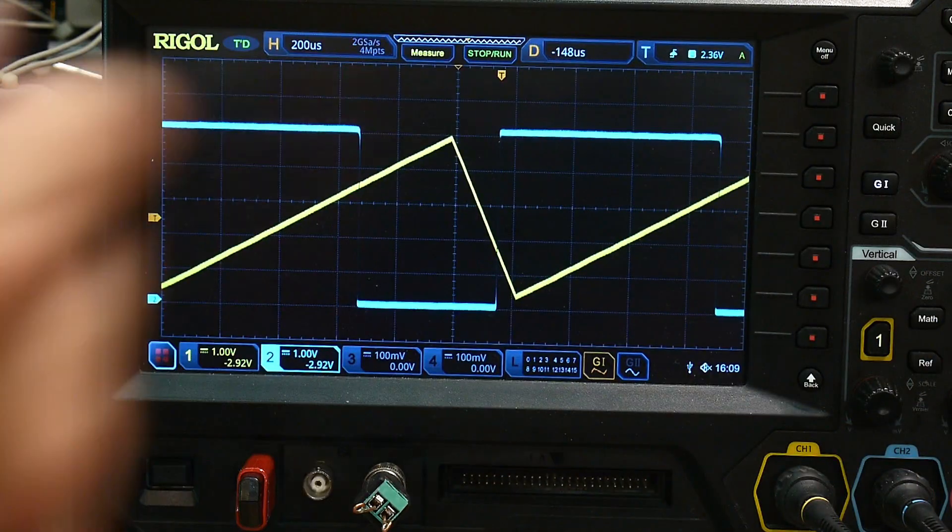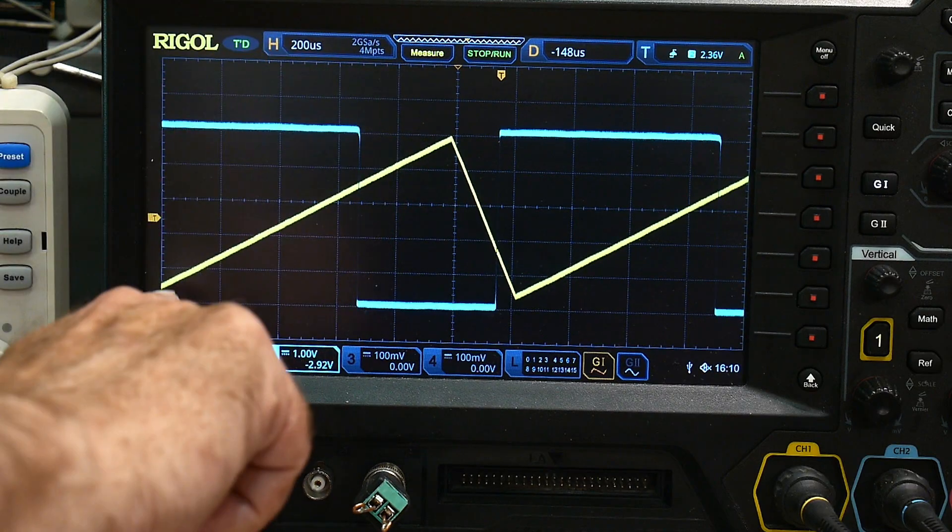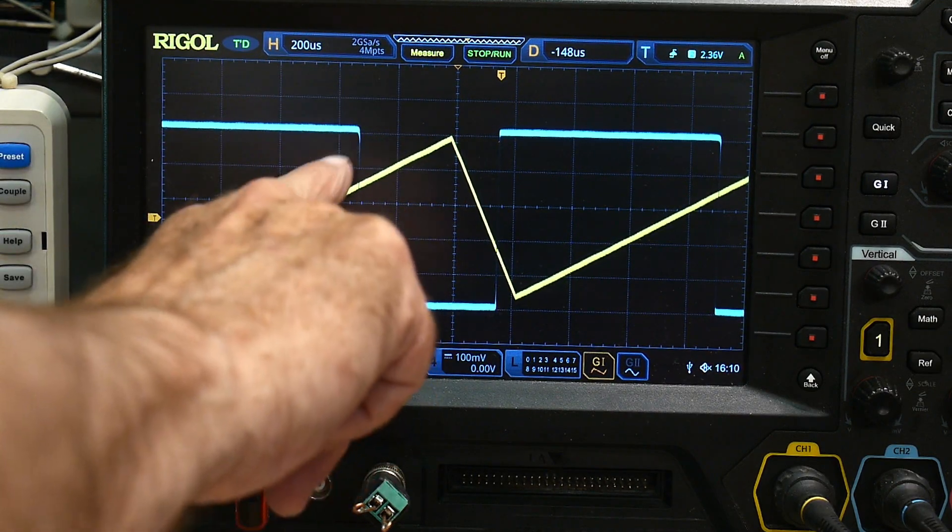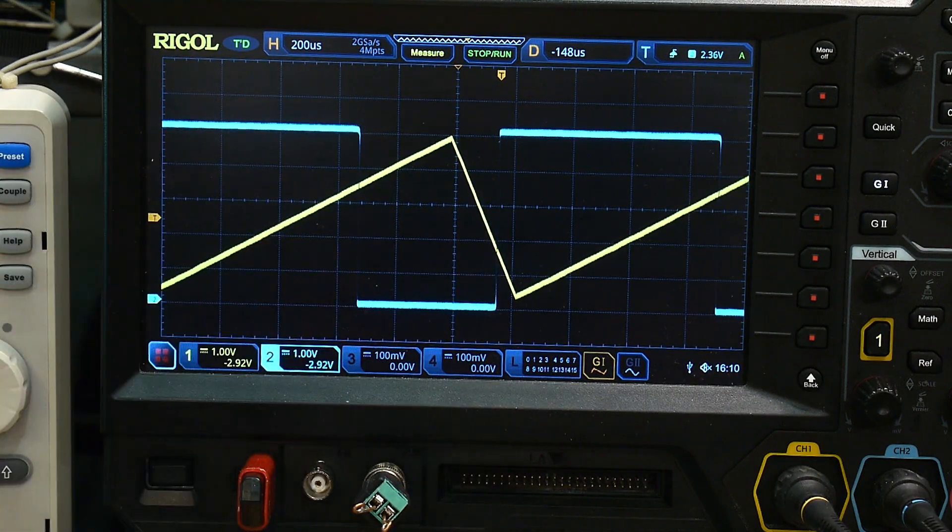So yeah, there you go. It is on the positive, it's triggering here and it goes low. And then on the negative, it's triggering down here. So that there's hysteresis between that voltage and that voltage.